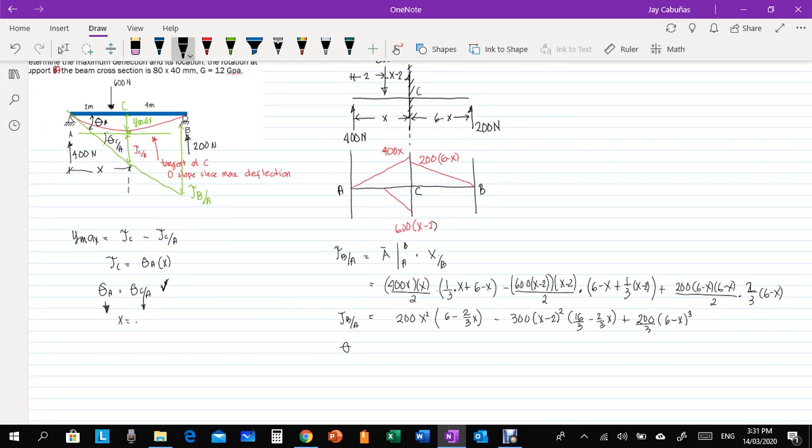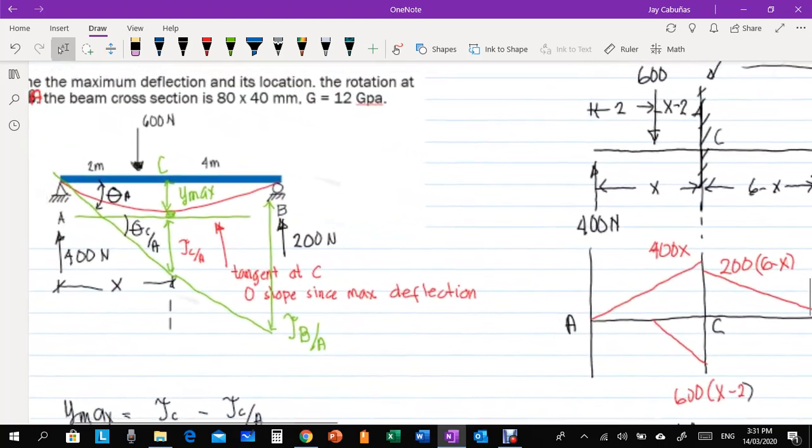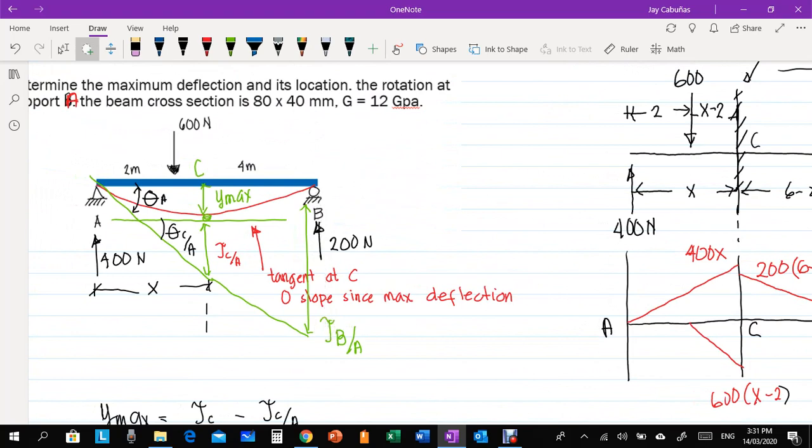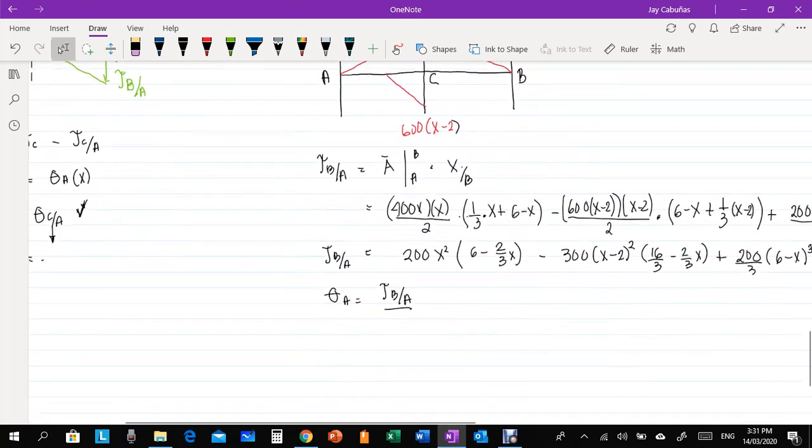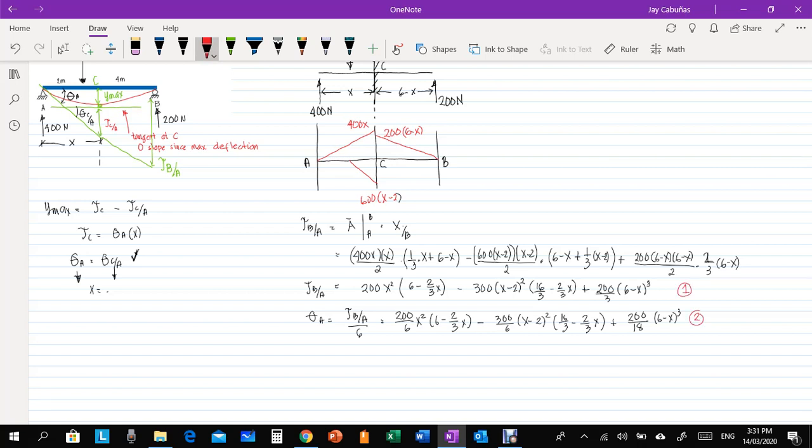Again, to get theta A we just divide T B over A divided by, divided by, look at this here, so, theta A is just equal to theta B A over 6. Okay, so, if we divide by 6, that is 200 over 6 X squared times 6 minus 2 third X minus 300 over 6 times X minus 2 squared times 16 over 3 minus 2 third X plus 200 over 18 times 6 minus X cubed. So, this would serve as our equation 1, and we need equation number 2.